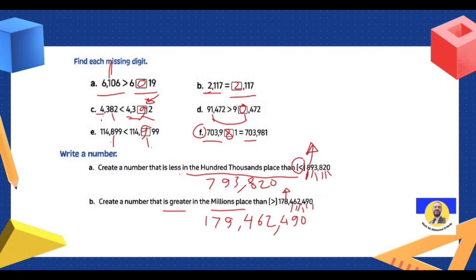So today we learned how to make comparisons in any form. You can convert to standard form, but be careful with the digits. And we learned how to find missing digits and create numbers less than or greater than — just focus carefully on the place value specified.